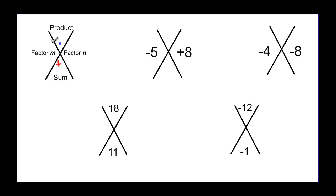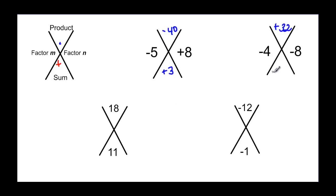You take the two numbers, put them in the top and the bottom, and see what happens. We won't normally do it this way, but I want to get you in the habit of looking at products and sums. The product of negative 5 times 8 is negative 40, and the sum of negative 5 plus 8 is positive 3. And negative 4 times negative 8 is positive 32, and negative 4 plus negative 8 gives negative 12.